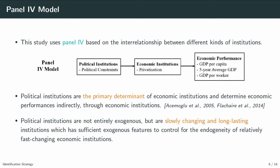Alternatively, this study uses a panel IV model based on the interrelationship between different kinds of institutions, called hierarchy of institutions, and based on the previous study saying political institutions are the primary determinant of economic institutions and determine economic outcomes through economic institutions. I think the best way to show the hierarchical relationship of institutions is using the instrumental variable method.